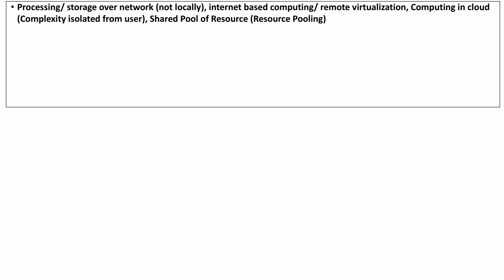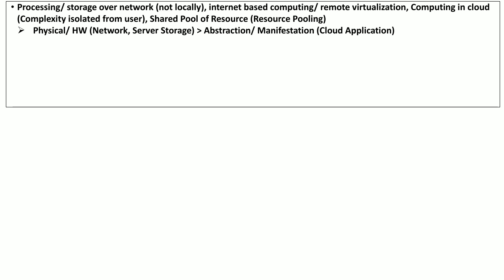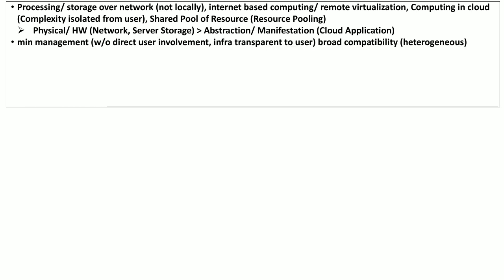This is also known as resource pooling. There are two layers of this shared pool of resources. The first layer is the physical or hardware layer — that is, the network devices, physical servers, or physical storage devices. Upon this physical layer is a layer of abstraction for manifestation of the cloud application to the user. There is minimum management overhead on the user, and the user has no direct interaction or involvement with the physical hardware, so this infrastructure remains transparent to the user.